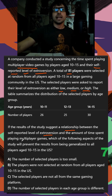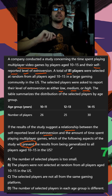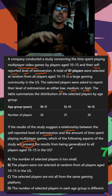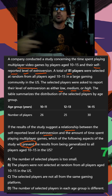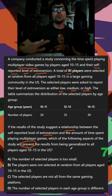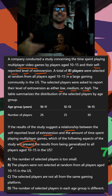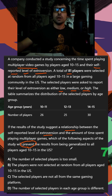Which of the following aspects of the study will prevent the results from being generalized to all players in this group? We want something in the study that could cause a problem — we don't want to link this sample to the generalized population. College Board's trend here is to find a bias, something that is not random in our study.